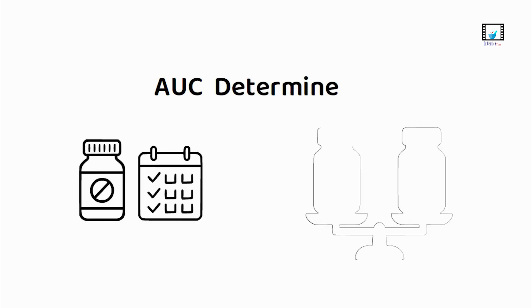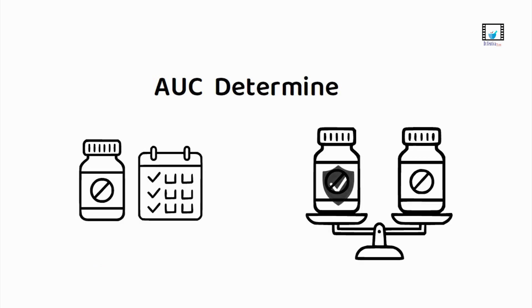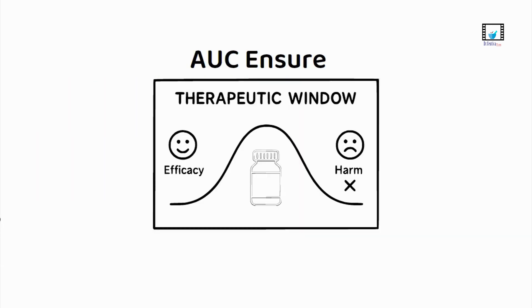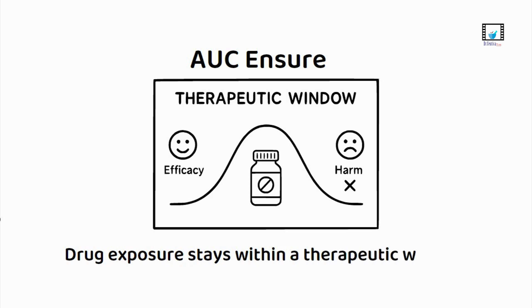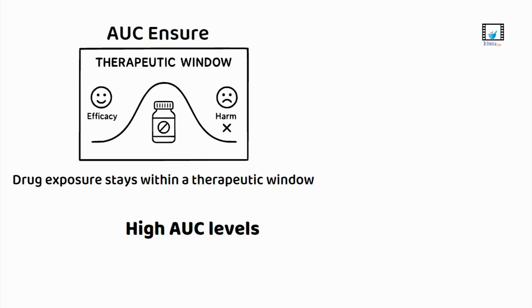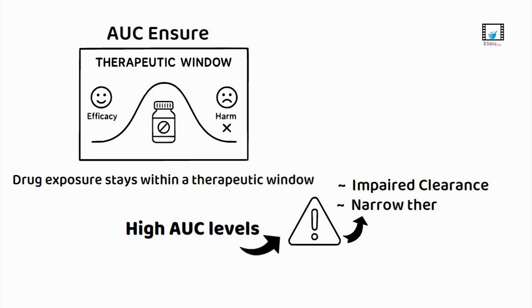Clinically, AUC helps determine proper dosing, compare drug products, and predict safety. AUC helps ensure that drug exposure stays within a therapeutic window — enough for efficacy, not too much for harm. High AUC levels may signal a risk for drug accumulation and adverse effects, especially in impaired clearance or narrow therapeutic index drugs.